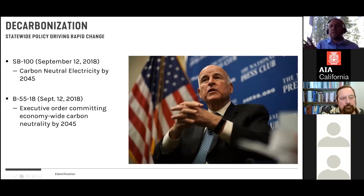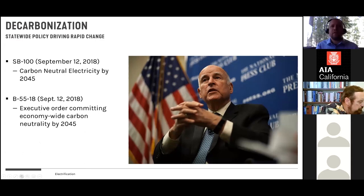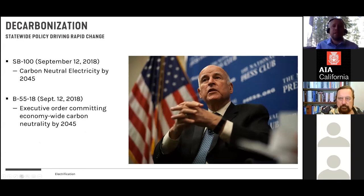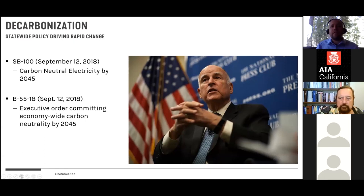A lot of what we're dealing with from a policy standpoint is driven by two key legislative actions: SB 100, focused on getting our electrical utility grid to be carbon neutral by 2045, and an executive order aimed at transitioning our entire economy to carbon neutrality. These are really ambitious goals that lit a fire on the state side — but more importantly, they lit a fire on the local government side.